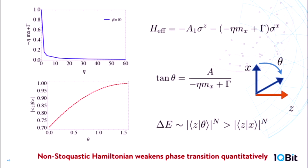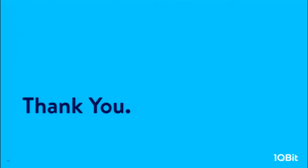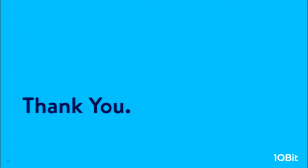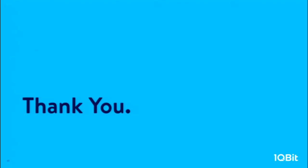A more interesting question is what happens if you increase the XX coupling significantly — that is beyond perturbation analysis. We want to understand if this eventually leads to a second-order phase transition or not, and hopefully we can sort out the result quite soon. Thank you.